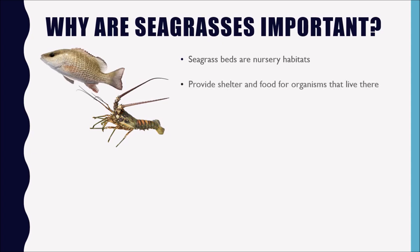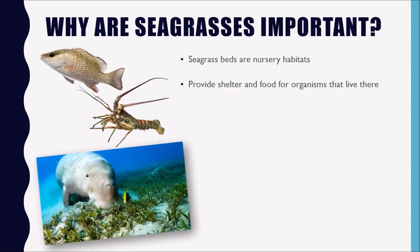Seagrasses provide shelter and food for the organisms that live there, but that doesn't mean we only find small animals in seagrass beds. You've probably seen pictures of manatees eating seagrass — we have a lot of manatees in the Indian River Lagoon because seagrass is what they eat. Manatees need to eat up to 10% of their body weight every single day in seagrass. An average adult manatee weighs between 1,000 and 1,200 pounds, so they can be eating up to 100 pounds of seagrass or more every single day.